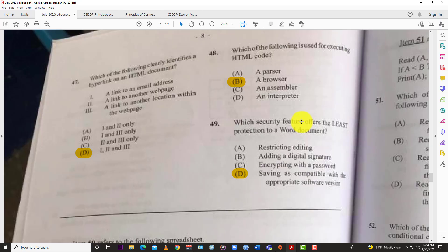Question 47: Which of the following clearly identifies a hyperlink on an HTML document? You have options: a link to an email address, a link to another webpage, a link to another location within the webpage. The best answer is D, all of the above. If you check it out, all of them would have a hyperlink once they're in a word document or PDF or anything like that.